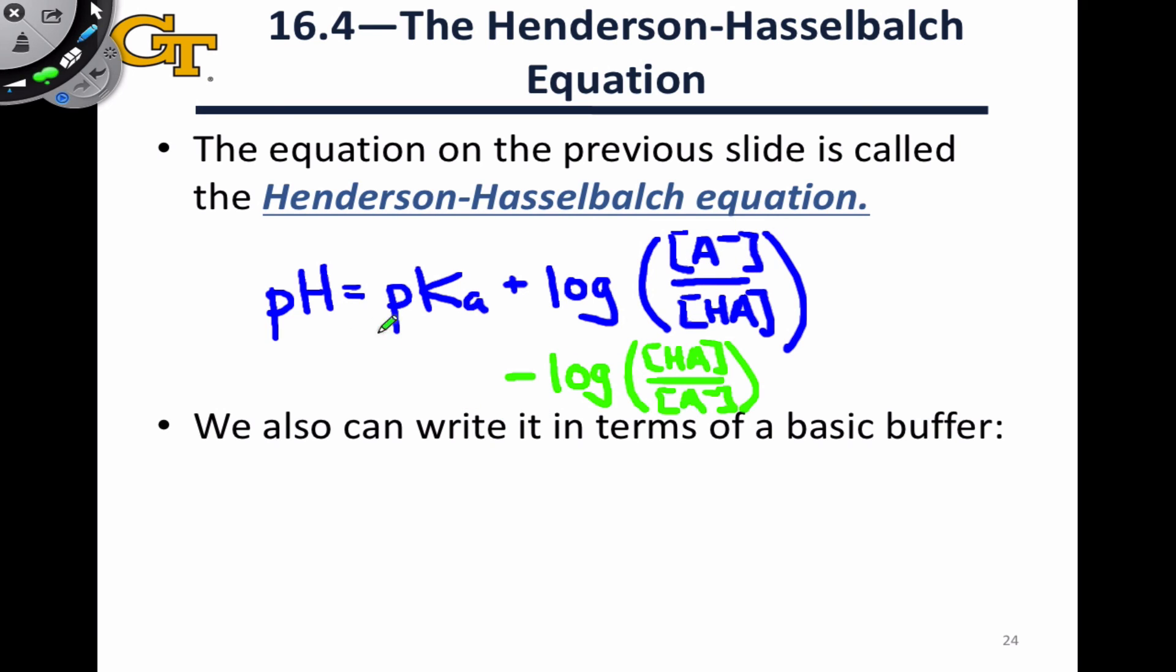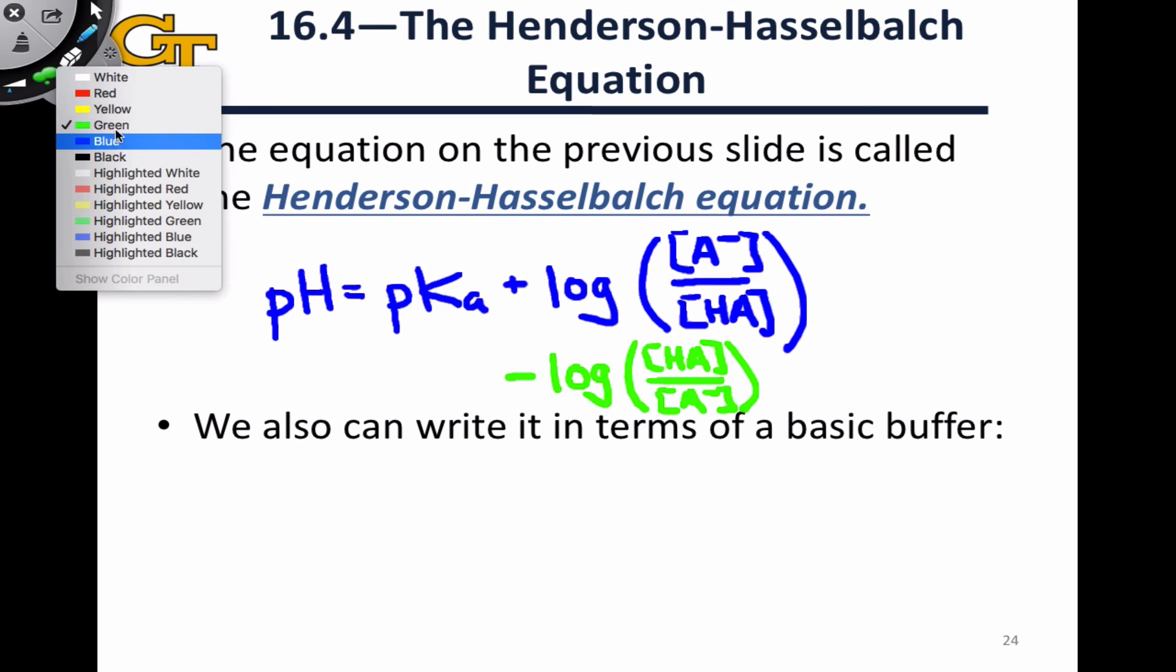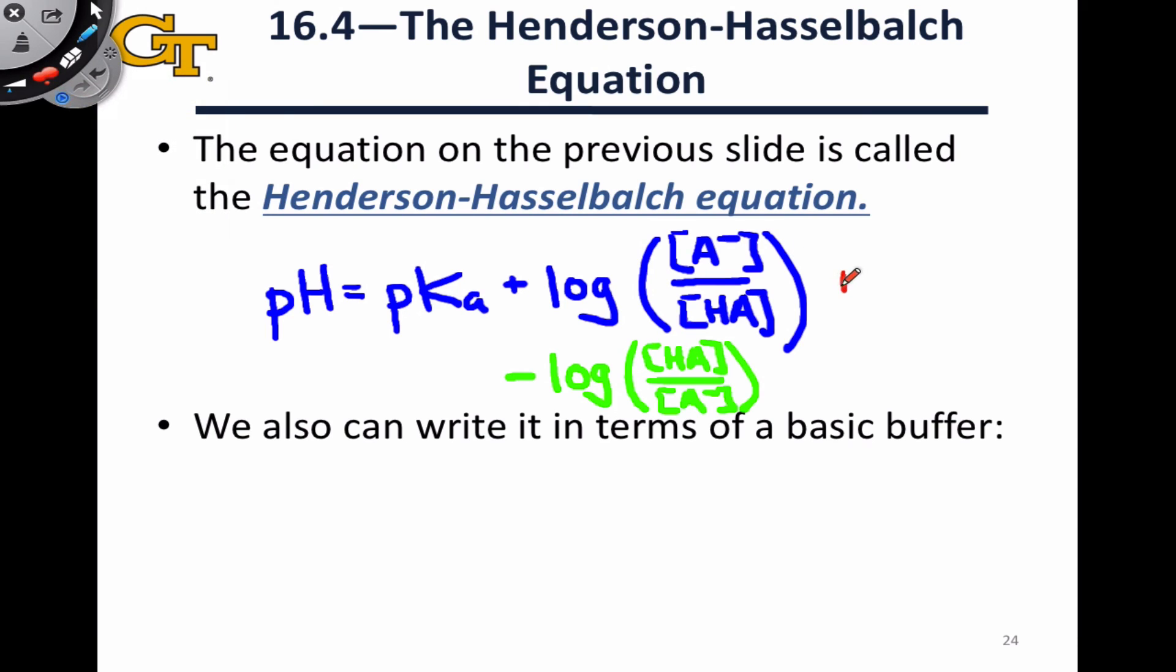I think it's helpful to think about how the concentration of the conjugate base should influence the pH conceptually. Adding more base should increase the pH. Intuitively that should feel right, and similarly adding more acid should decrease the pH, and these two terms in blue and green reflect that idea. You may also see this log term written just using the words base and acid, so you might see plus log concentration of base divided by concentration of acid, for example.